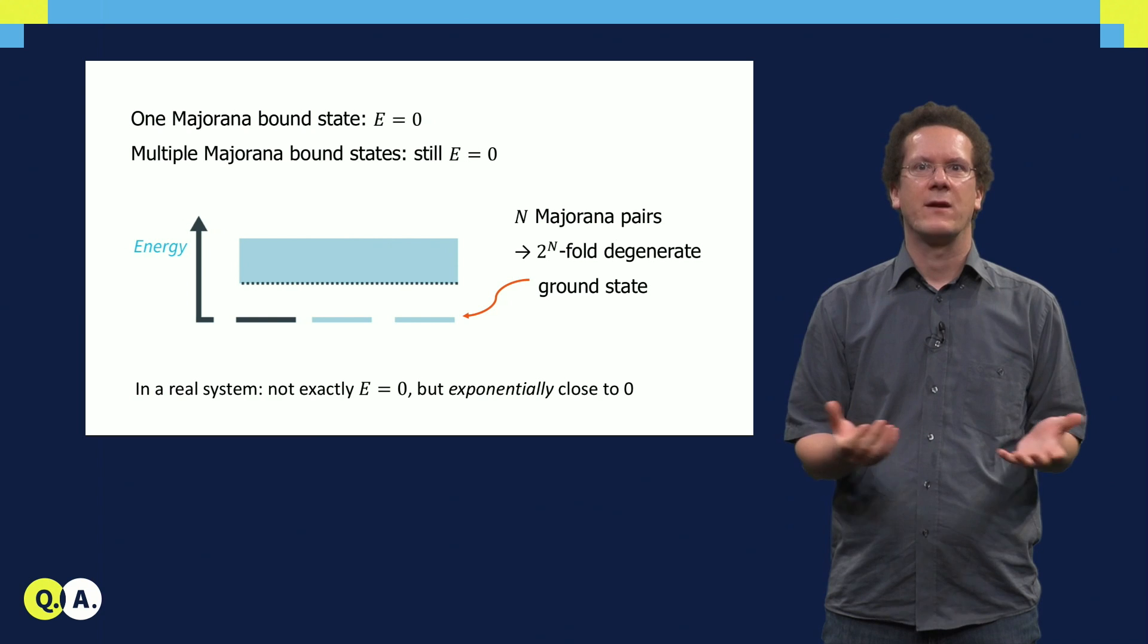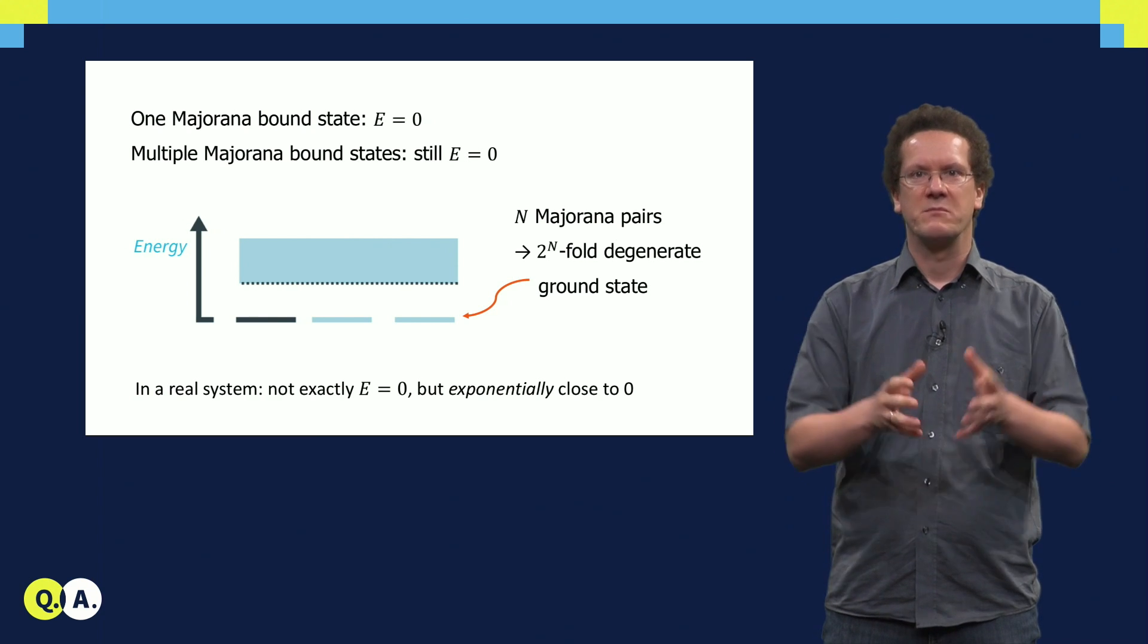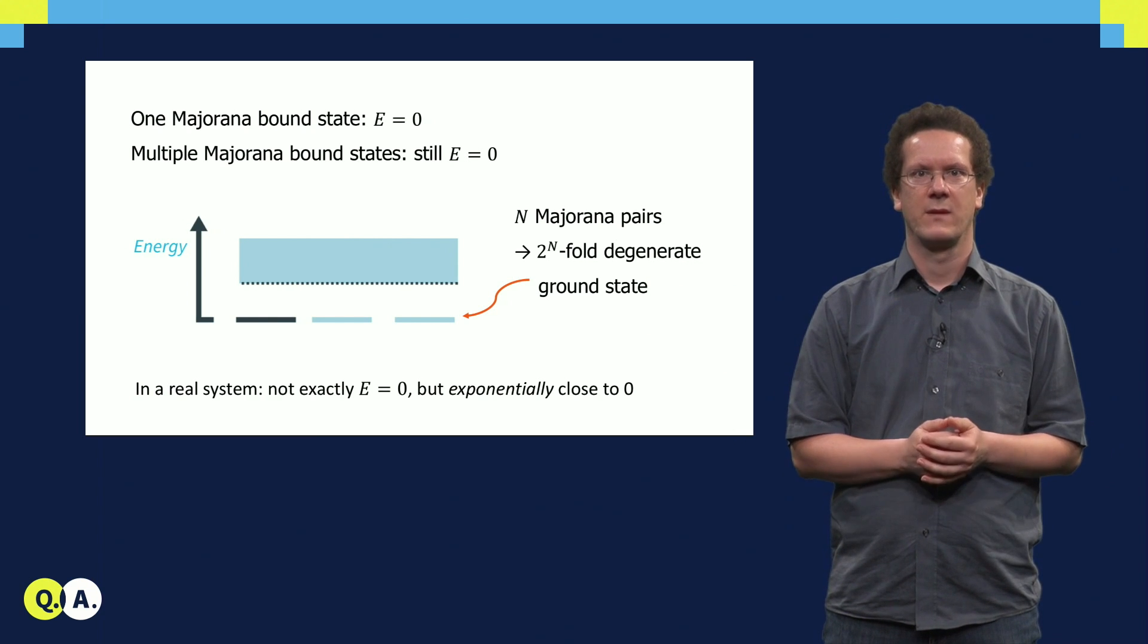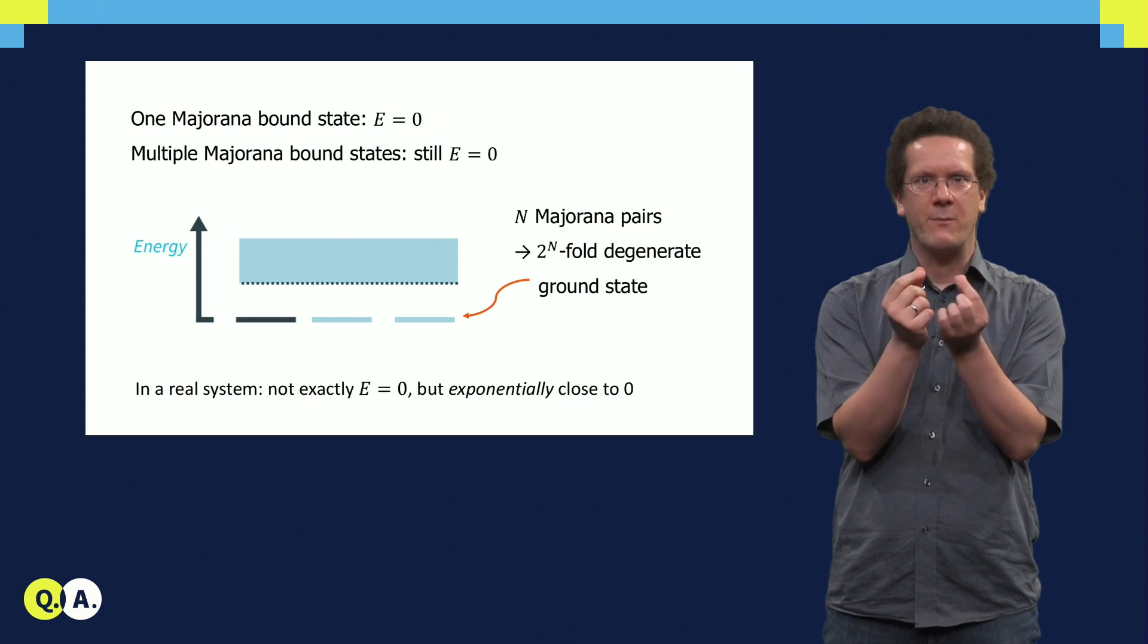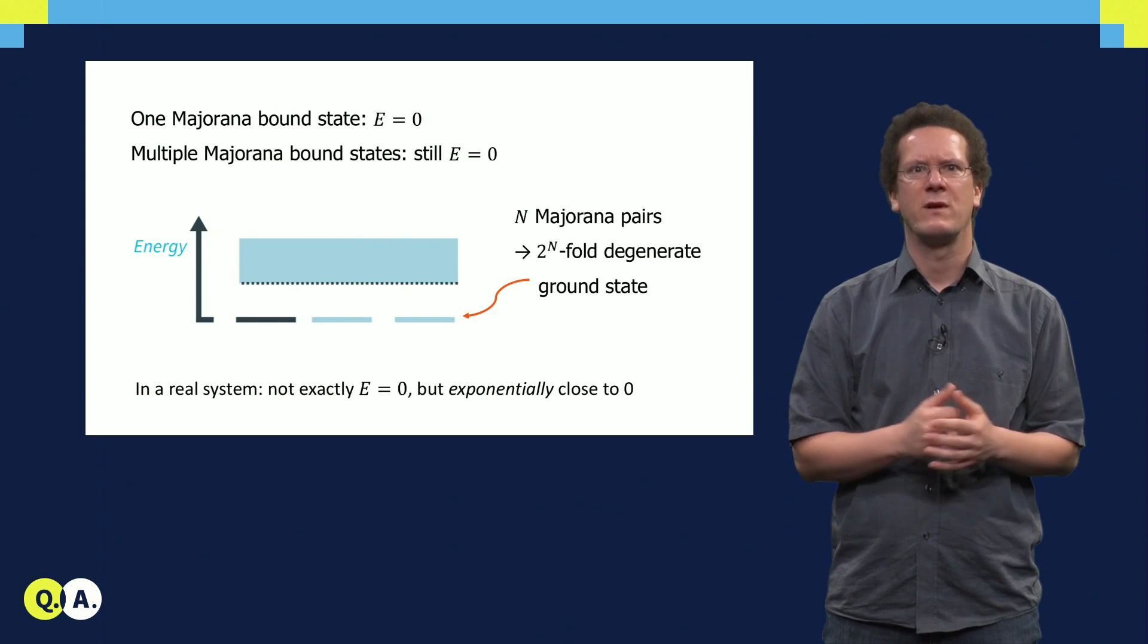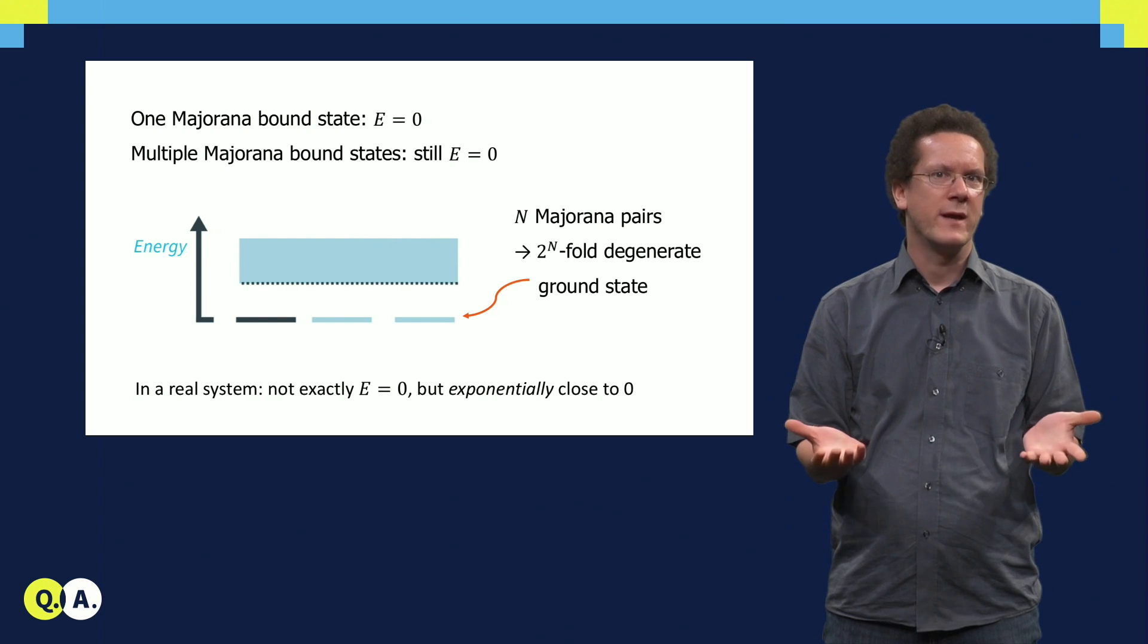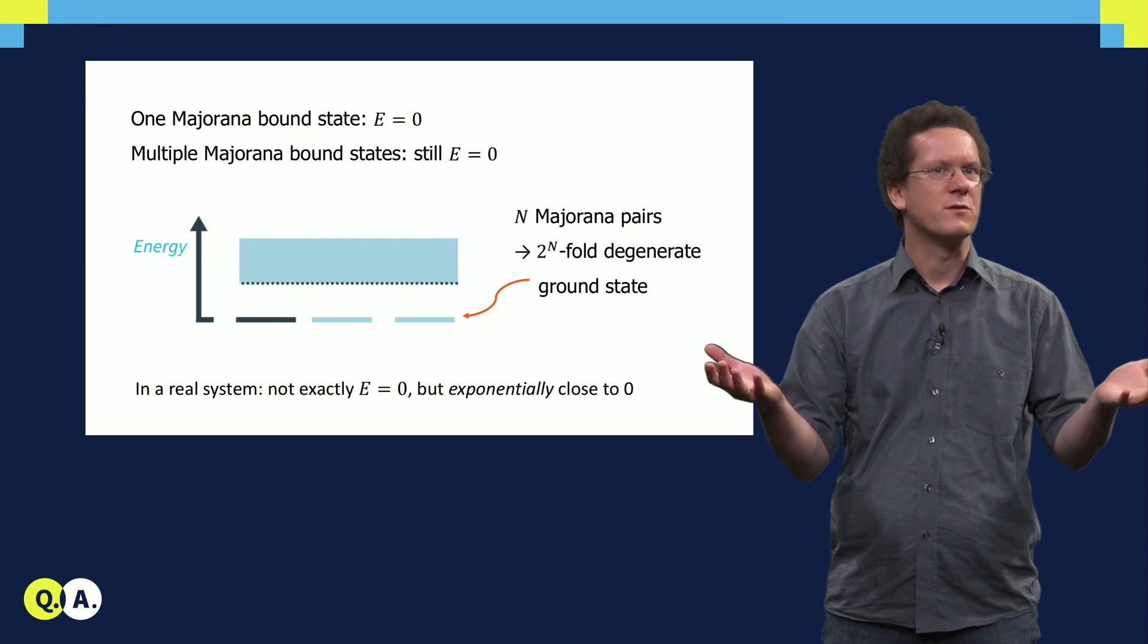In reality, we cannot separate the Majorana bound states infinitely far from each other. Hence, there is a small overlap left over. But this overlap is exponentially small, so the states will be exponentially close to zero energy, which is good enough.